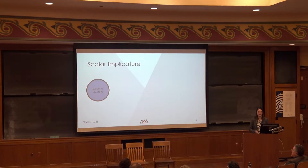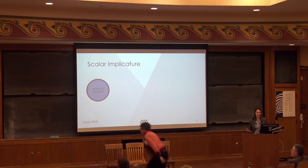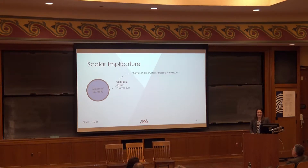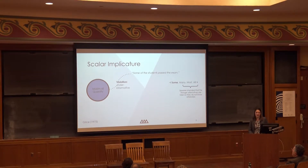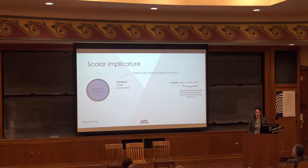This is a well-known case in the linguistics literature. We heard about the maxim of quantity—we expect speakers to be as informative as required. This can be violated if someone produces an under-informative sentence like 'Some of the students passed the exam.' This is under-informative because 'some' is not as informative as the quantifier 'all.' So the inference you make is that if the speaker used the weaker quantifier, the stronger one is false—the implicature is 'not all students passed the exam.'